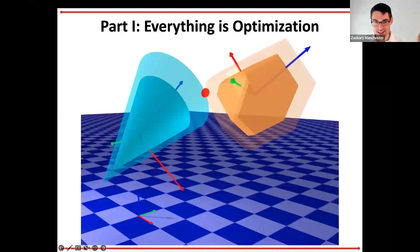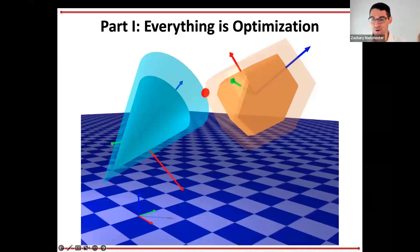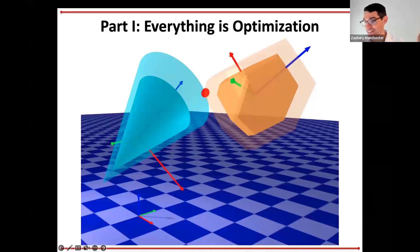I'm going to tell you about some of the work my lab has been working on over the last couple of years to try to make robots able to do those sorts of things. We're going to divide this into two parts. Part one is — as the title says — everything is optimization. I'm going to try to convince you that basically every piece of this problem, at least from a control and motion planning perspective, can be posed as an optimization problem. Maybe that's a good idea, maybe it's not — we'll see.